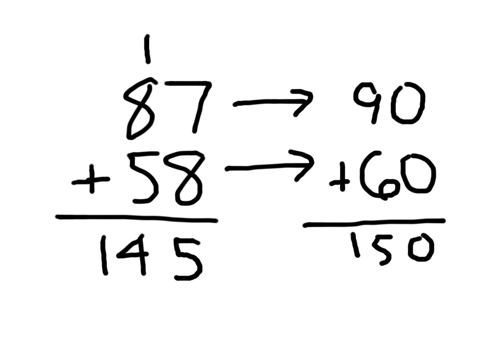Now let's see if it makes sense. 87, we went up 3 to 90. We went up 2 from 58 to 60. So our answer should be about 5 away from each other. And yes, that's the case. It's not always the case. You can't just round the answer. It won't always be the case because some cases you might go up, and in some cases you might go down.